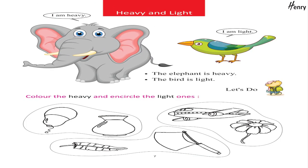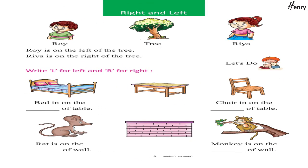Heavy and Light: I am Heavy, I am Light. The Elephant is Heavy, the Bird is Light. Let's do — color the Heavy and encircle the Light.